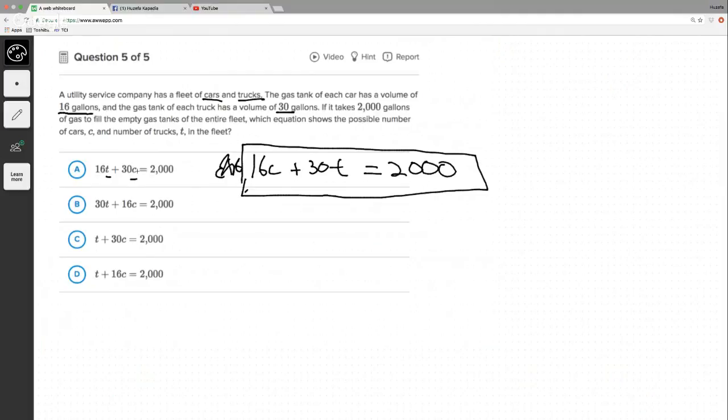So these ones are more or less straightforward. This one's wrong because it's flipped. This one's right. This one's wrong, there's no value with the T. No value with the T, so it's B.